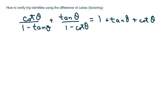Hi everyone. We're going to verify a trig identity using the difference of cubes, which involves factoring and common denominator work. This one would be considered somewhat difficult if you don't know how to factor. I'm going to work on the left side of the equation because it seems more complicated than the right side. The first thing I'm going to do is write everything in terms of sine and cosine.